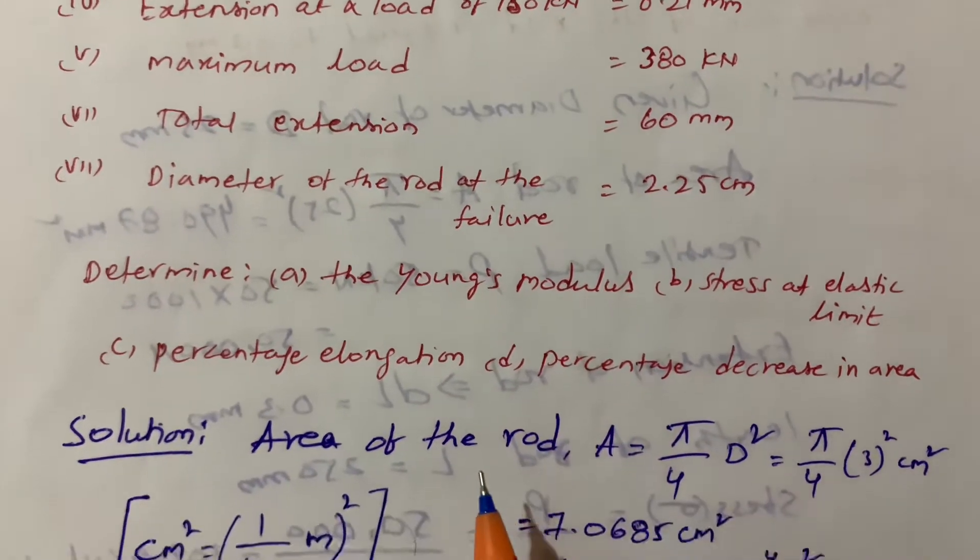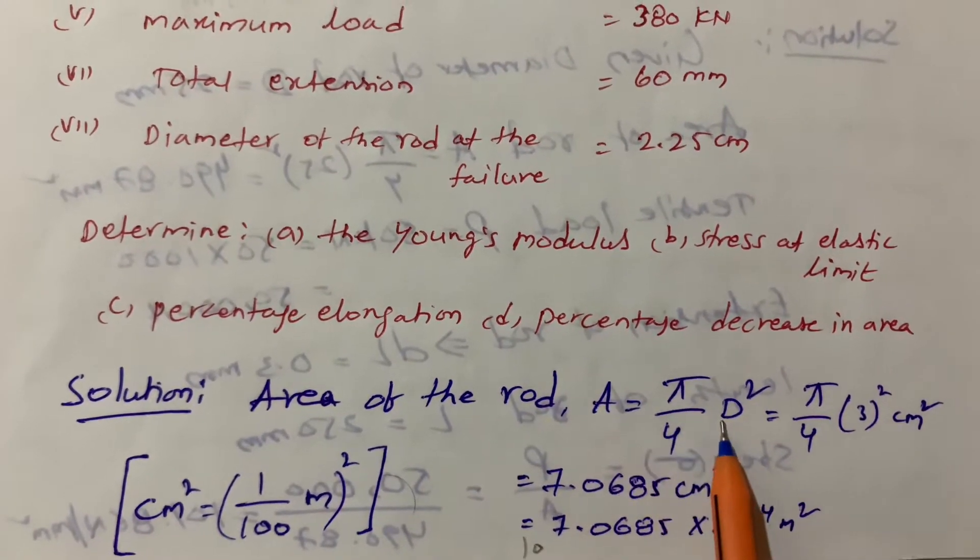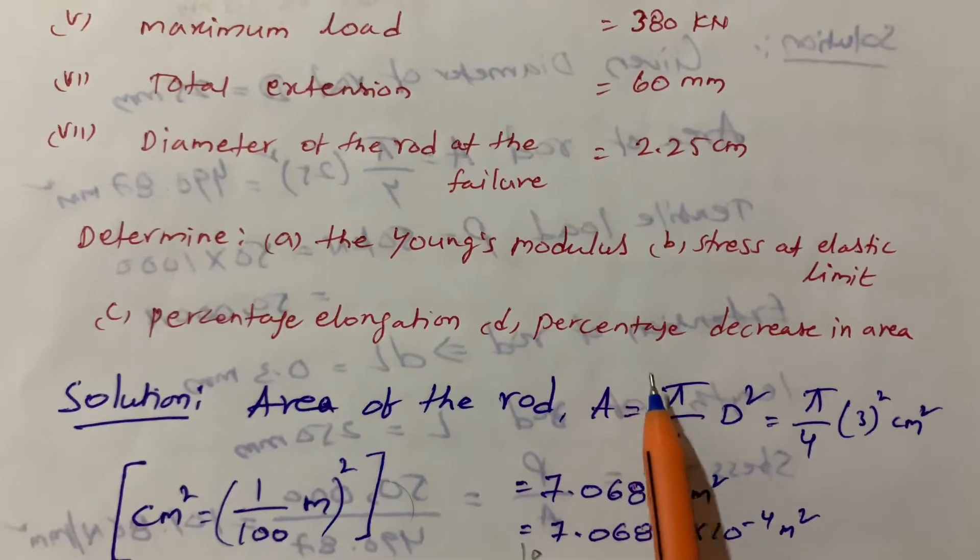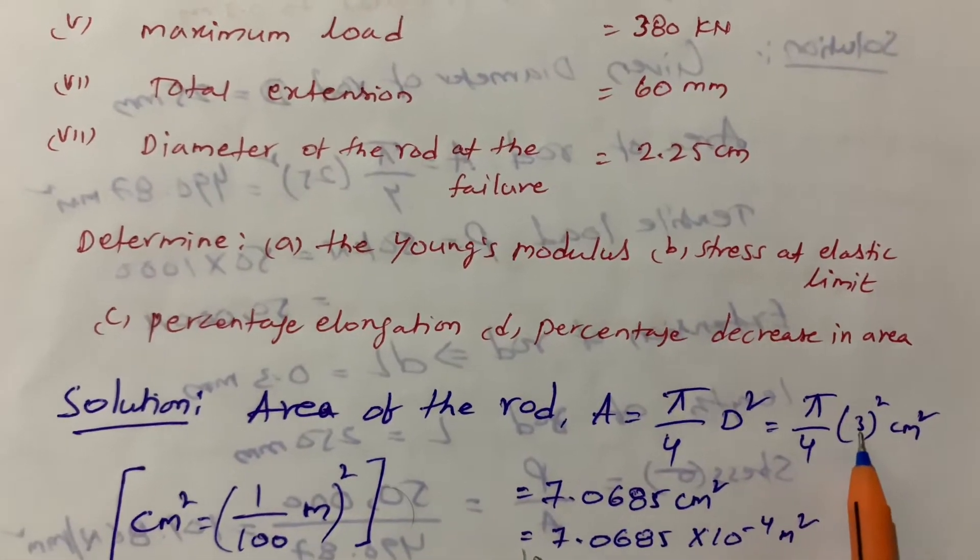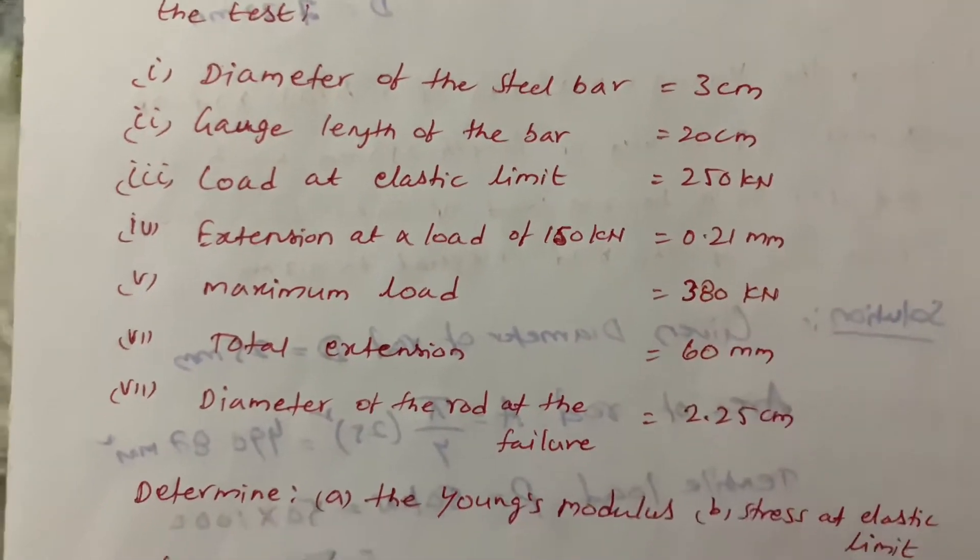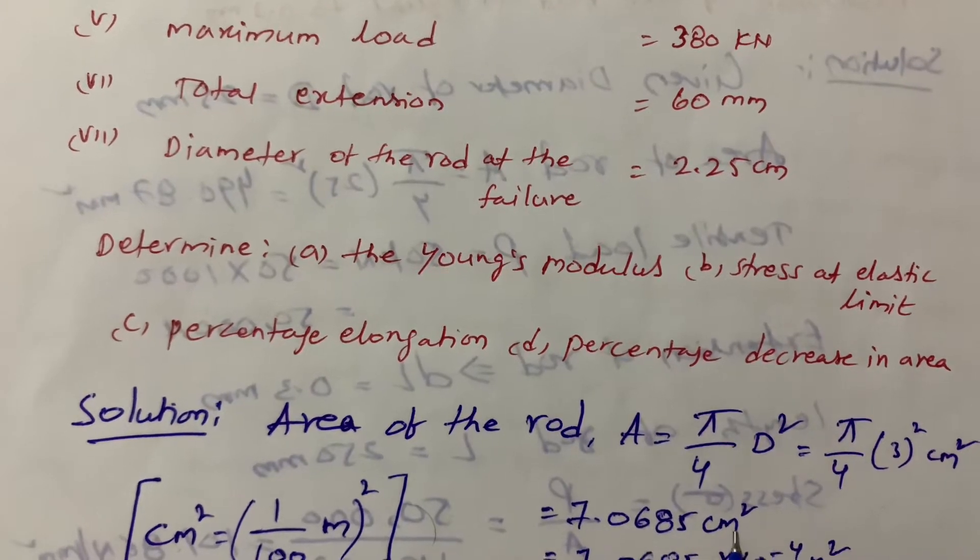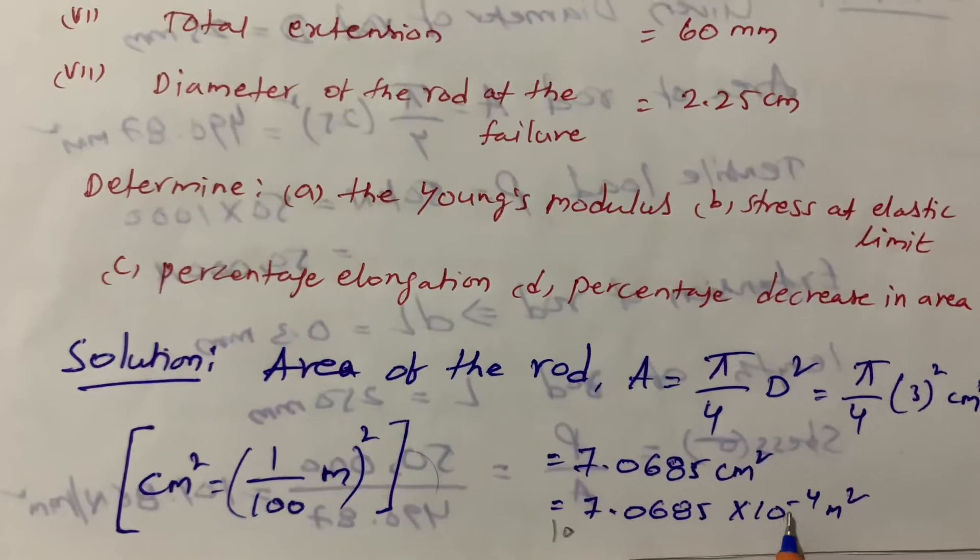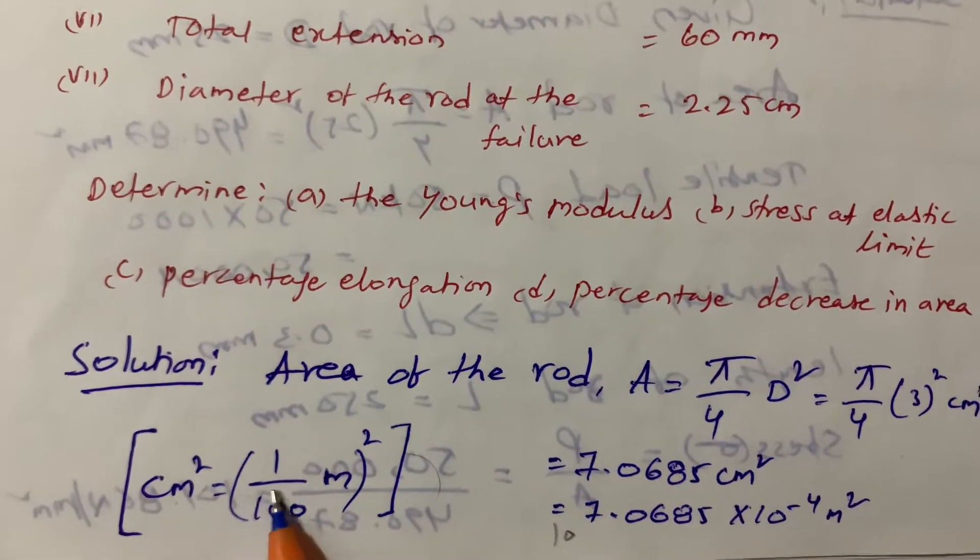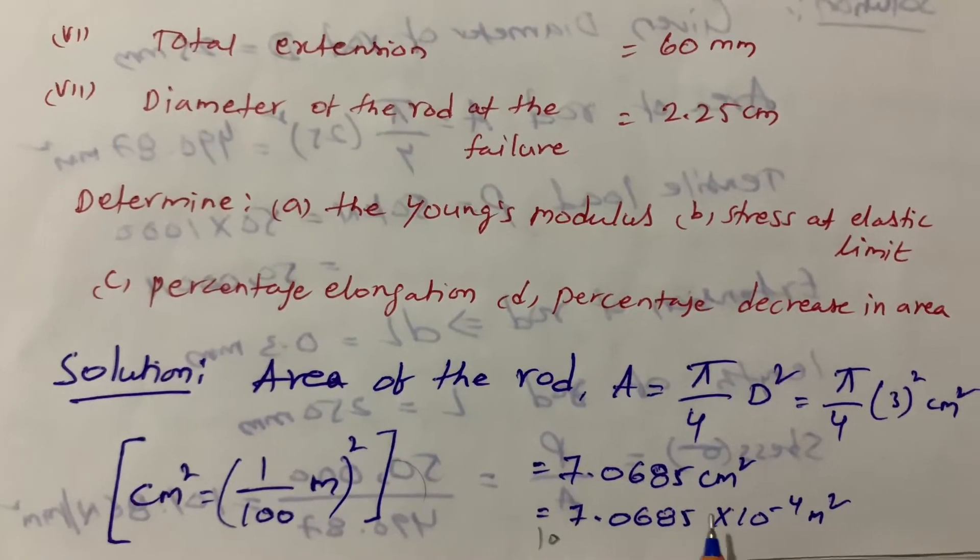First we need to find out area of the rod. So area of the rod formula A equals pi by 4 d square because the rod is in circular shape. So pi by 4 times 3 square, where 3 is in centimeters, equals 7.0685 centimeter square. I converted this into meter square: 7.0685 times 10 to the power negative 4 meter square.